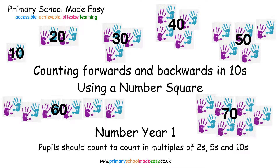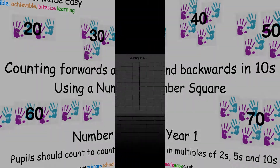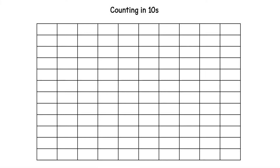Counting forwards and backwards in tens, using a number square. On a number square, the whole tens are at the end of each row. Each time the units get to nine, the next number will be a whole ten.